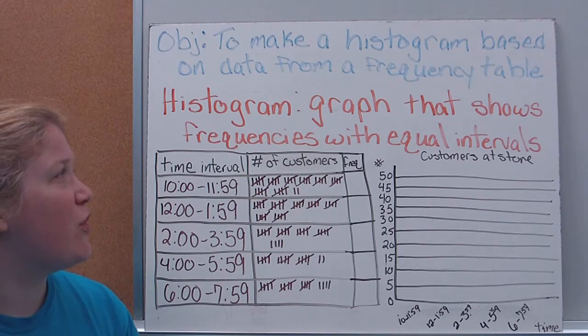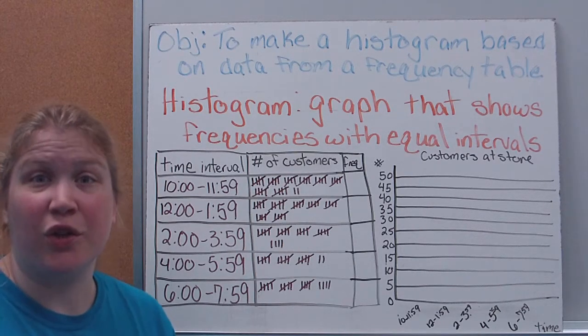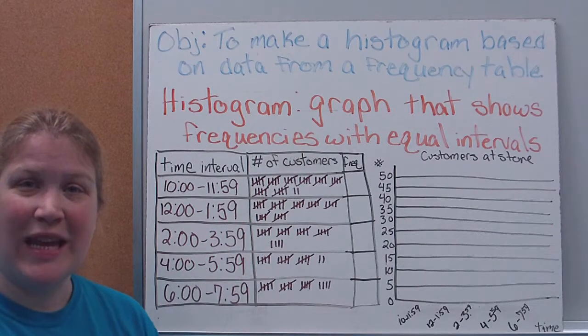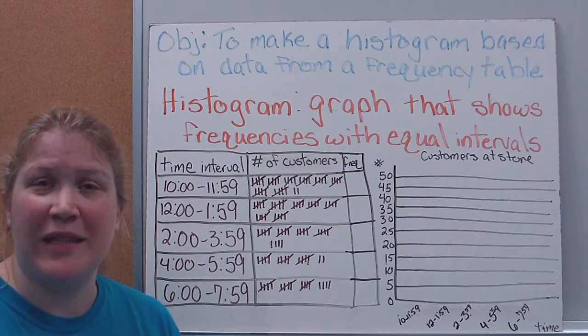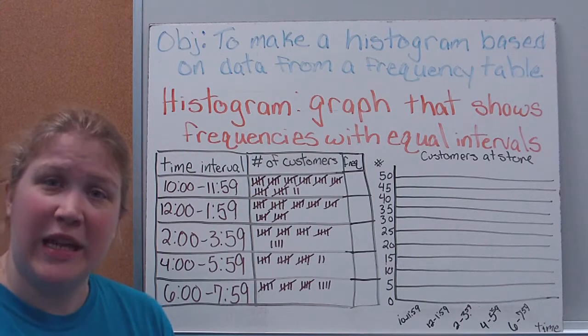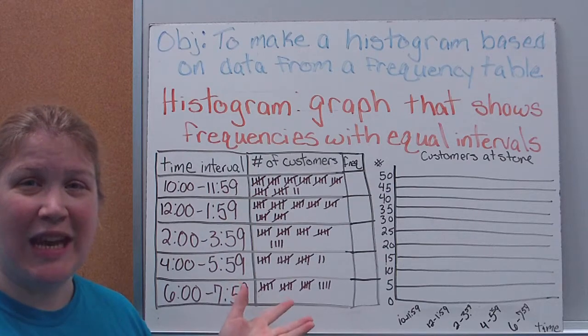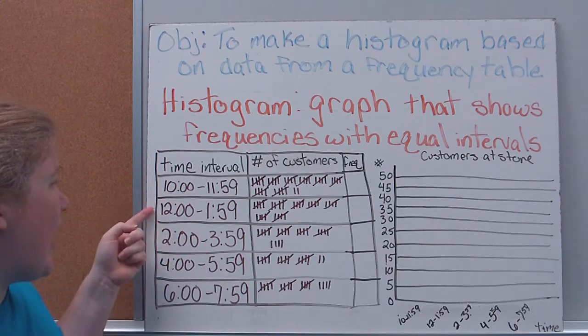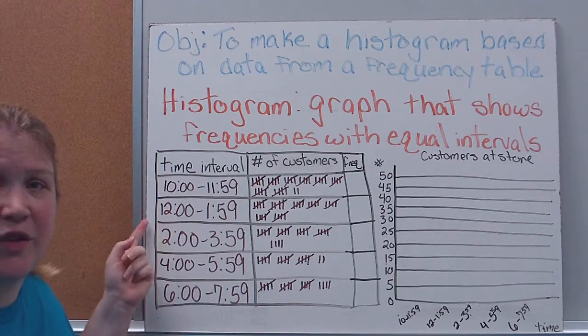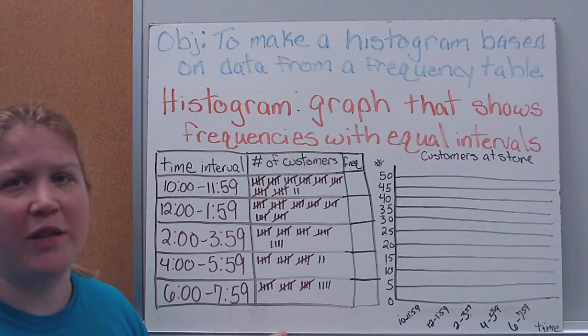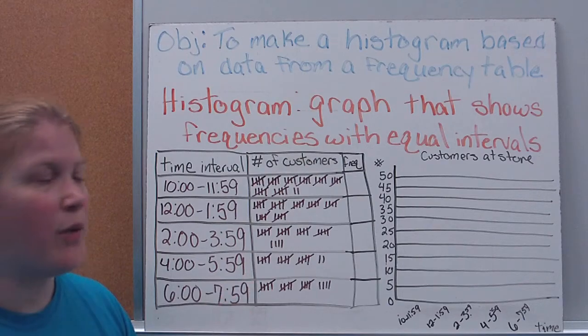A histogram is simply a graph that shows the frequency with equal intervals. So what I've written up here already is a frequency table, which we did a few lessons back. If you're confused by the frequency table, go ahead and re-watch that video. And we're going to use the frequency table, which has time intervals. You'll notice these are even intervals. They're two-hour intervals.